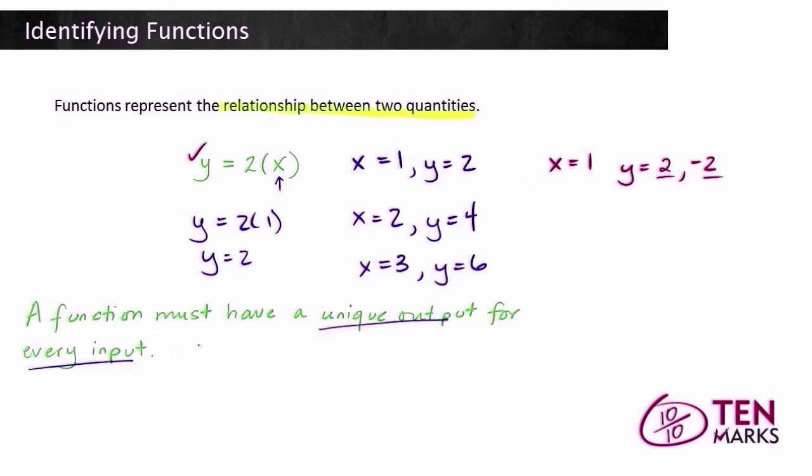Now that doesn't mean that you can't have two inputs that have the same output. For example, if you had a function where when x equals 3, y equals 4, and then when x equals negative 1, y also equals 4. The output values can repeat. This is actually still a function. It really only has to do with the x value. The x value can't pair to two different y values.